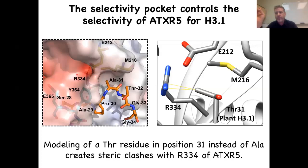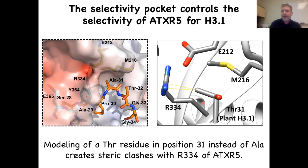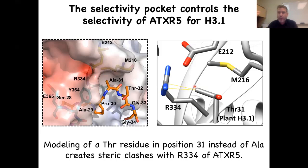Zooming into the specificity pocket, alanine-31 is nicely nestled in a very tight pocket formed by various residues in the kinetic domain and the loops. This is a very narrow pocket. If we model a threonine residue in that position — which we did using quantum molecular mechanics — it generates a lot of clashes with arginine-334, suggesting that even the simple change from an alanine to threonine creates enough steric clashes to disrupt the binding of ATXR5 to H3.3, explaining why ATXR5 is unable to methylate H3.3.